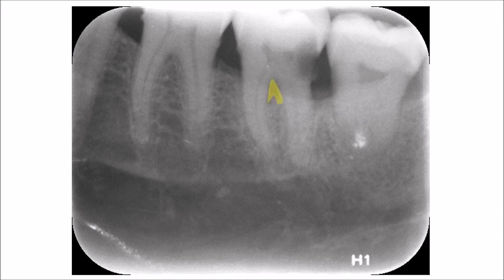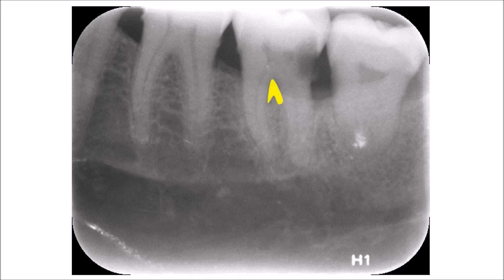In this radiograph, the area highlighted in yellow shows that in the lower second molar, the level of bone has gone below the bifurcation area of the tooth. What makes it radiographically traceable is that you will see a radiolucency located exactly below the bifurcation area, as visible in this radiograph.